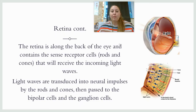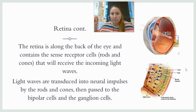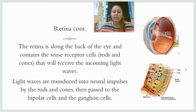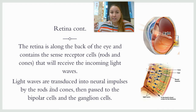The retina is the layer of cells along the back of the eye, and it contains a bunch of different receptor cells. Rods and cones are the ones receiving the incoming light waves and processing them. Light waves are transduced — that's transduction — into neural impulses by the rods and cones.